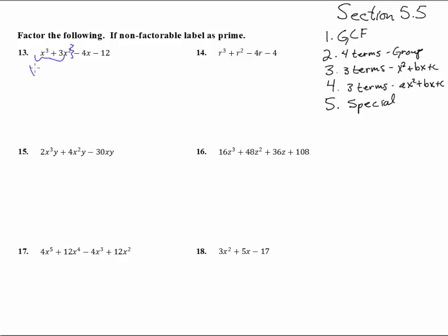What can we pull out of here? An X squared. We're left with X plus 3. What can we pull out of this half? And it looks like we have a negative 4 that we can pull out, and that is X plus 3. Now, note when we pull out that negative sign, we are left with a positive. Hey, that's lucky because those two things right there are now the same thing. So we now have X squared minus 4 times X plus 3.